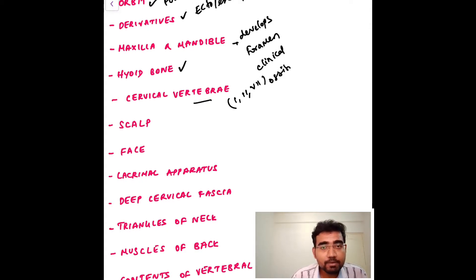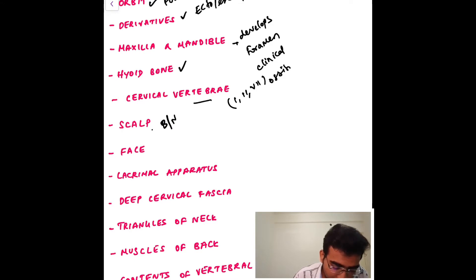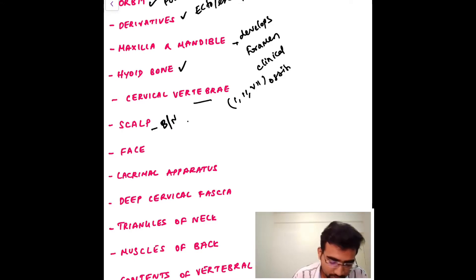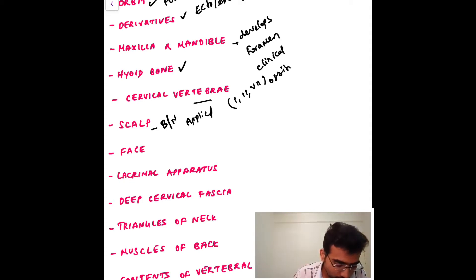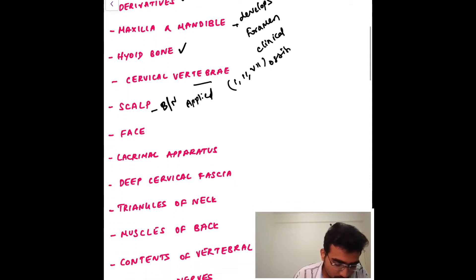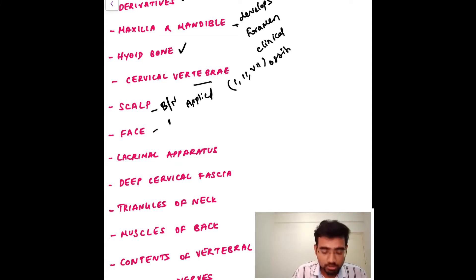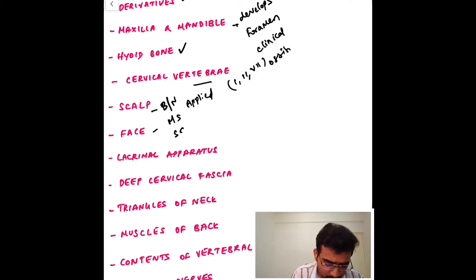For the scalp, you need to know the layers, the blood supply, and the nerve supply. The applied anatomy of the scalp is very important — there will be profuse bleeding and you should understand why it occurs. For the face, you need to read about both the motor supply and the sensory supply, as well as the muscles.